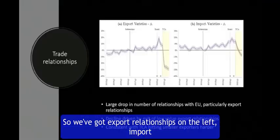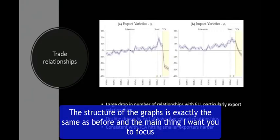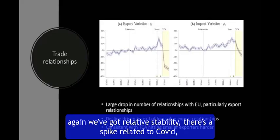We've got export relationships on the left, import relationships on the right. The structure of the graph is exactly the same as before, and the main thing I want you to focus on is, particularly on the export graph, you can see again we've got relative stability.